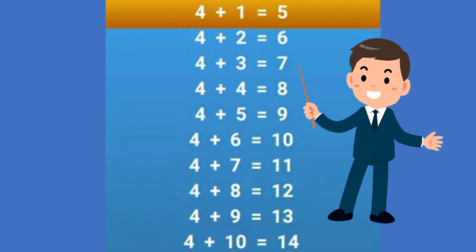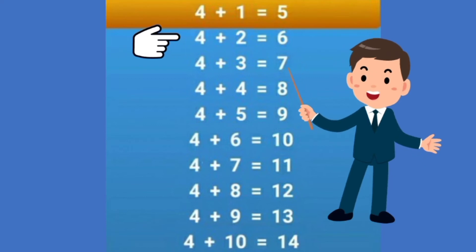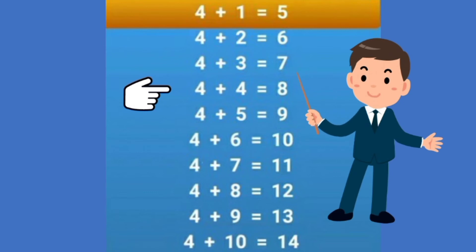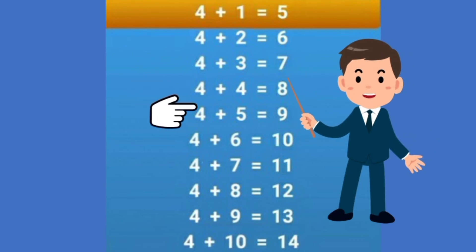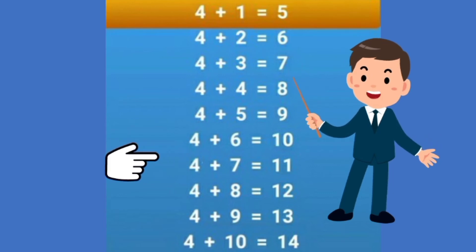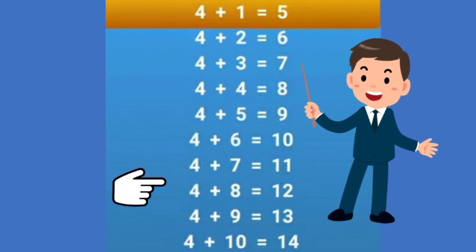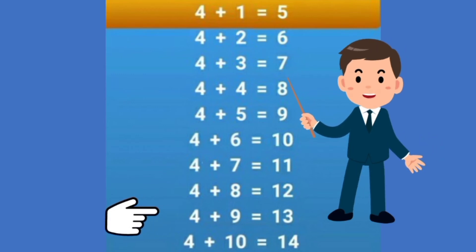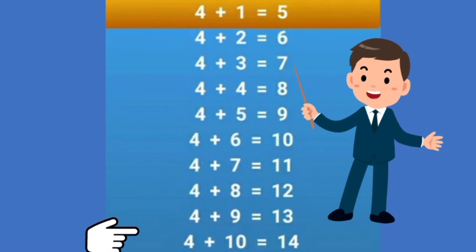Dear children, next see this another table. 4 plus 1 is equal to 5. 4 plus 2 is equal to 6. 4 plus 3 is equal to 7. 4 plus 4 is equal to 8. 4 plus 5 is equal to 9. 4 plus 6 is equal to 10. 4 plus 7 is equal to 11. 4 plus 8 is equal to 12. 4 plus 9 is equal to 13. 4 plus 10 is equal to 14.